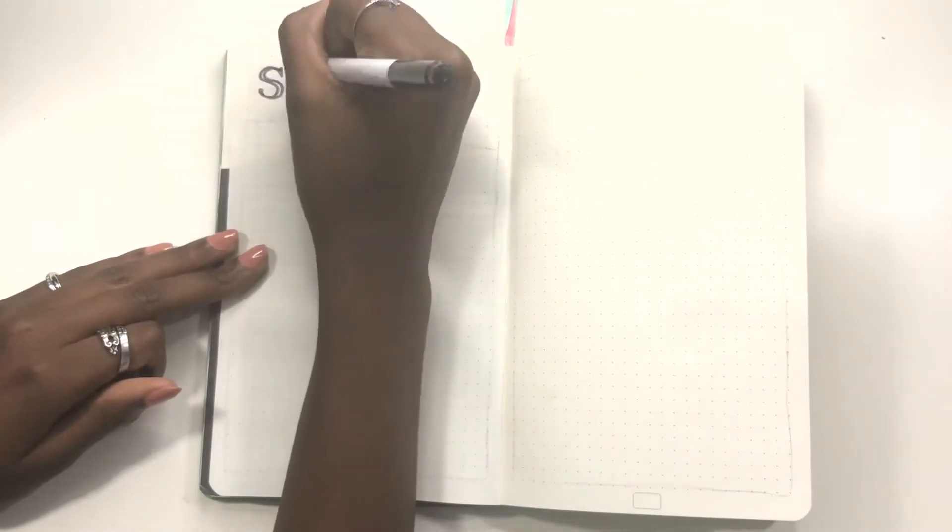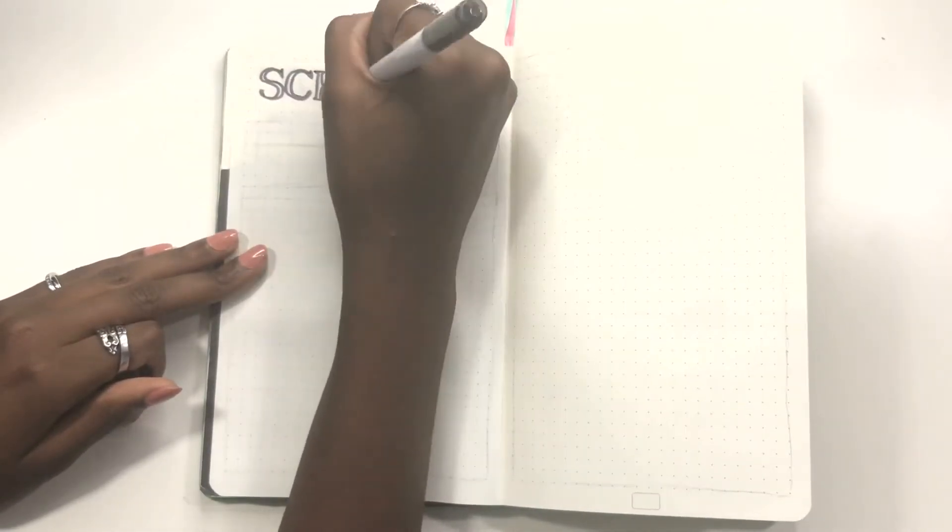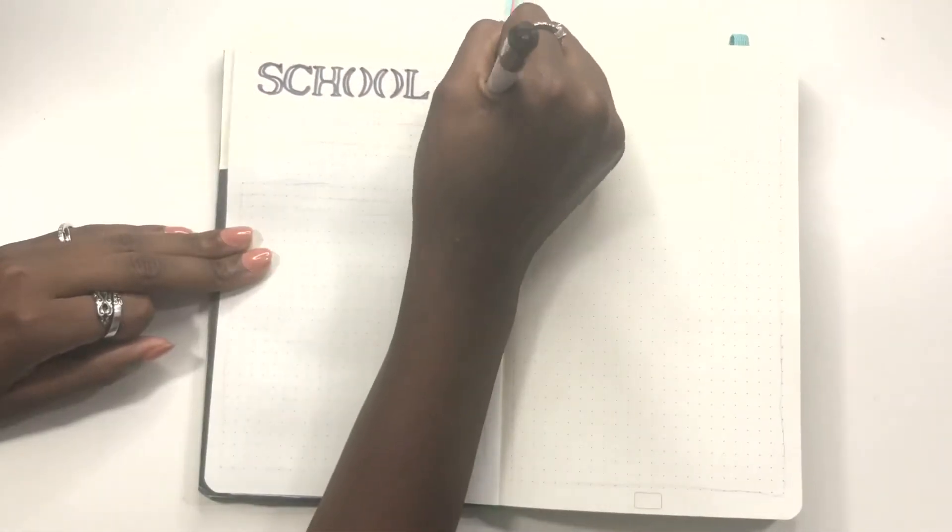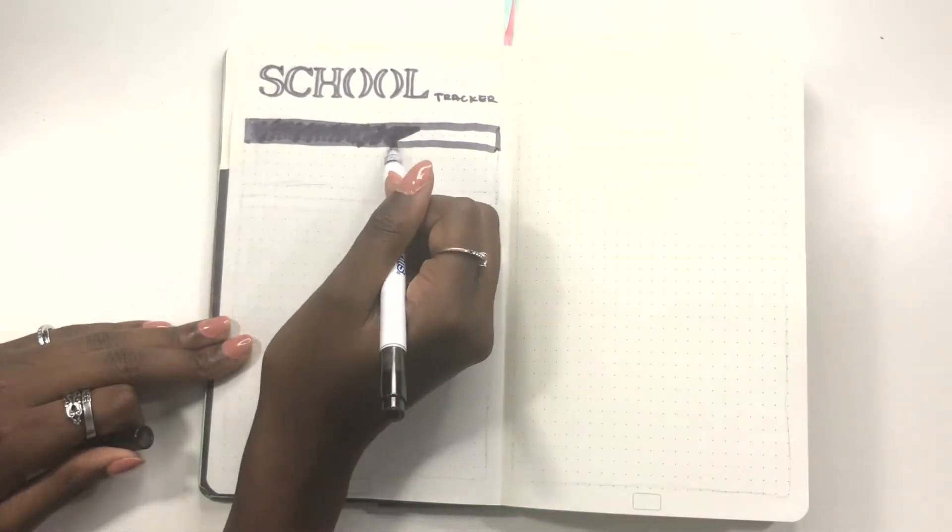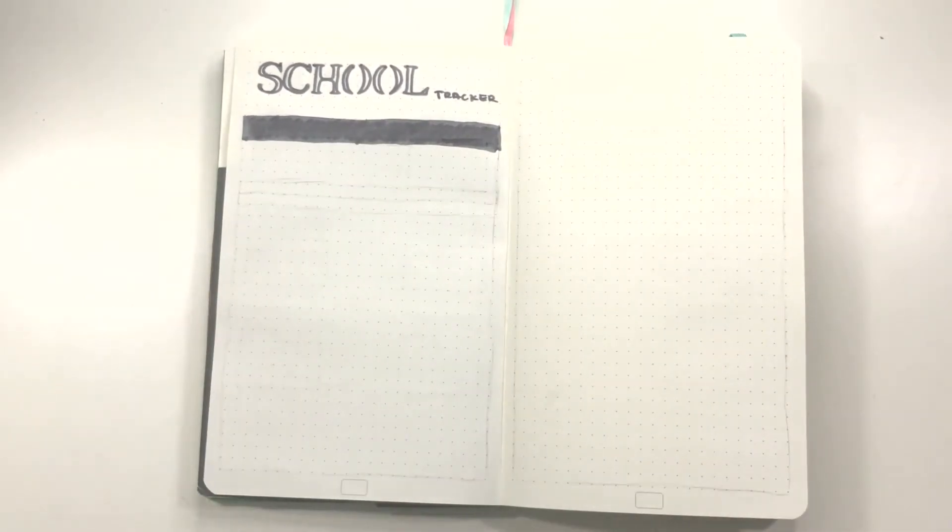Okay, so next is my school tracker. You guys already know how this goes, so I'm not going to explain it. If you want to see how I do it, then go check out my other bullet journaling videos. But with all that being said, I'm going to let you guys hear the music and roll the clip.